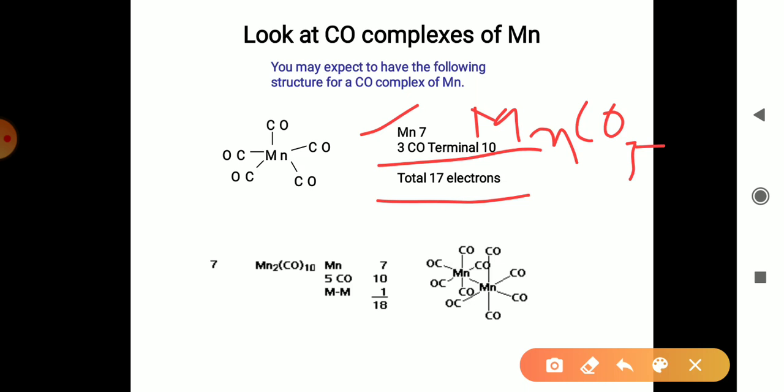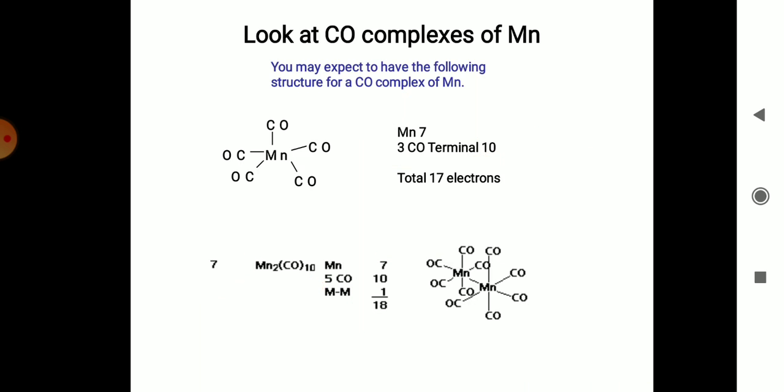But in a dimer of Mn2(CO)10, it will have the effective atomic number 18 and follow the 18 electron rule. Here you can calculate the electrons of Mn, the contribution of ligands which is 5 and 2 for each, so it is 10, and one metal-metal bond. So the total is 18, and it obeys the 18 electron rule.